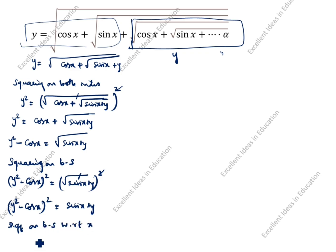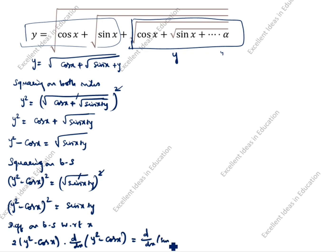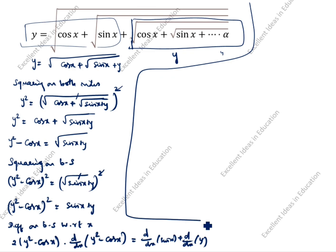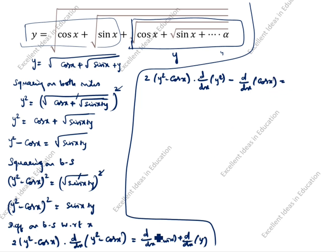Now differentiating on both sides with respect to x. This is the chain rule, so 2 comes times before. So 2(y squared minus cos x) into d/dx of (y squared minus cos x) equals d/dx of sin x plus d/dx of y. The derivative of sin x is cos x plus dy/dx.